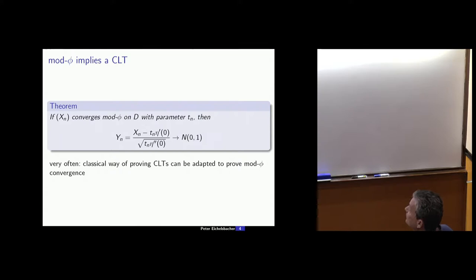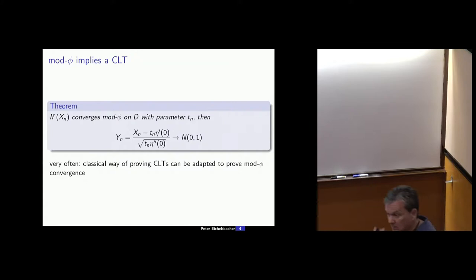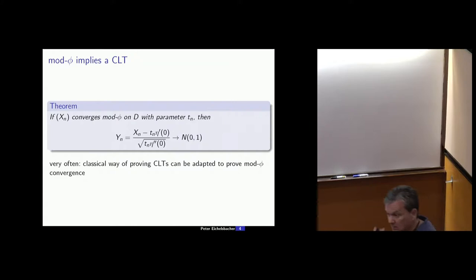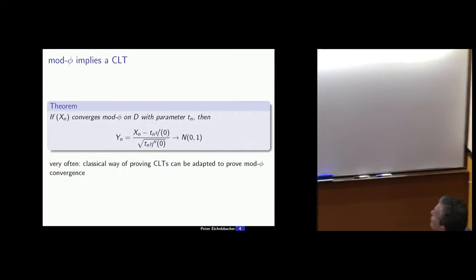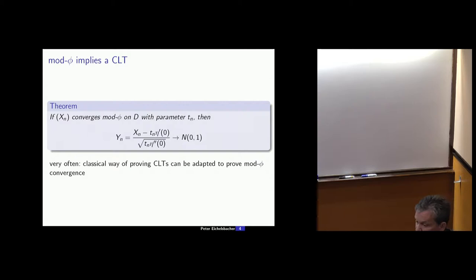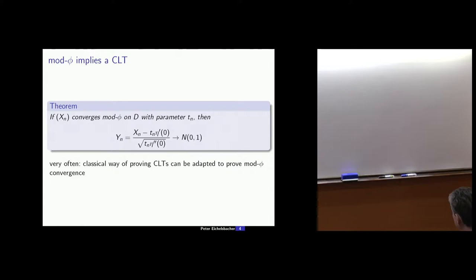A very nice remark: if you have mod-phi convergence with parameter Tn and function psi, then this object converges to the standard normal distribution. So you have a central limit theorem as a consequence of mod-phi convergence. Very often, looking back at the rich literature, the way of proving a central limit theorem can be adapted to prove mod-phi, using complex analysis and Fourier transforms. A certain adaptation gives you the finer result of mod-phi convergence.